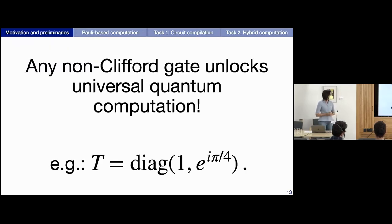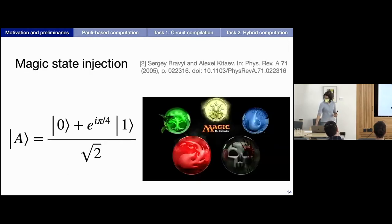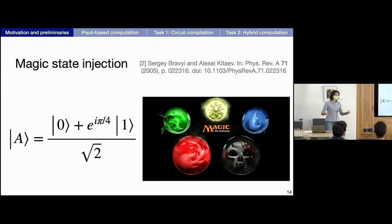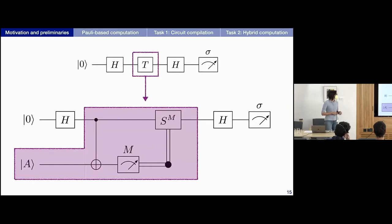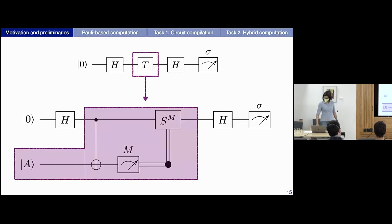If we introduce any non-Clifford gates, we unlock universal quantum computation. In this presentation I'll talk a lot about the T-gate. The final concept is magic state injection — in particular the |A⟩ state. If you have a T-gate, you can replace it with the well-known T-gadget, where you bring in a magic state resource, use Clifford gates, and need classical feed-forward to determine whether to apply an S-gate, thereby enacting a T-gate on the main qubit.